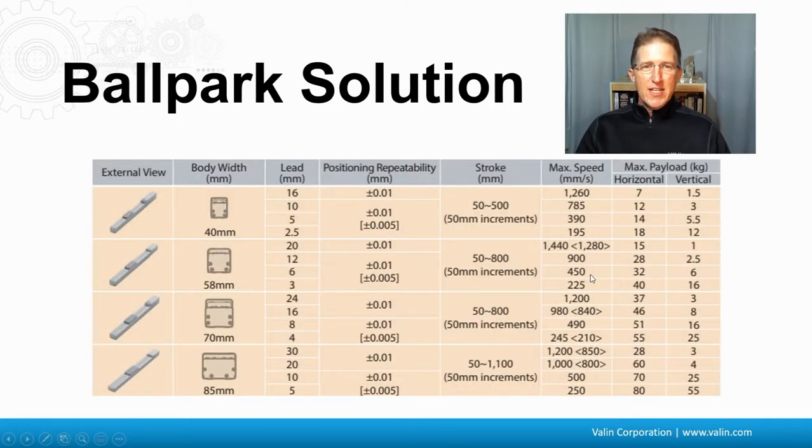Well, let's take a look at starting with just kind of a ballpark solution. Here are some actuators that kind of get us into an area of the realm of what might be a good solution. But you see the highest maximum speed is only 1,400 millimeters per second here. We have ones that go down to 250. Then we have the payloads that bounce above and below that 30 kilograms for the horizontal load.